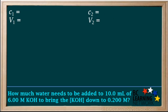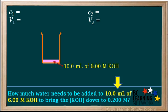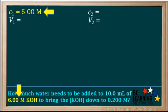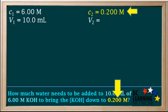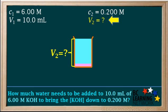We'll start step one by identifying the values given in the question. The initial solution is 10 milliliters of 6 molar KOH. So the value for C1 is 6 molar, and the initial volume, V1, is 10 milliliters. The concentration of the final solution, C2, needs to be 0.2 molar. And our unknown is the volume of the final solution, V2.